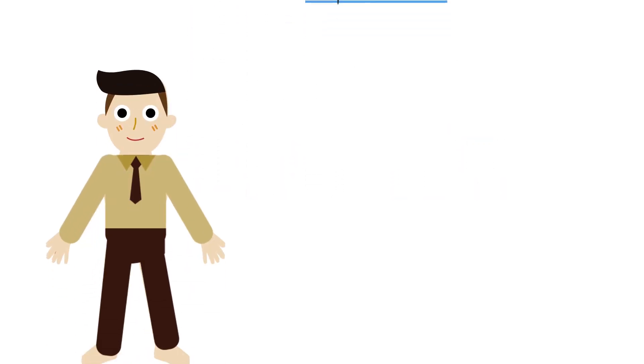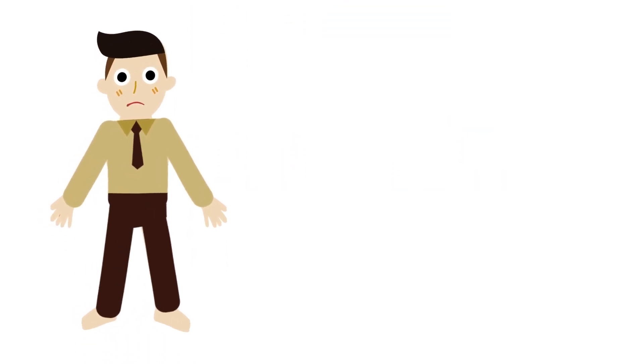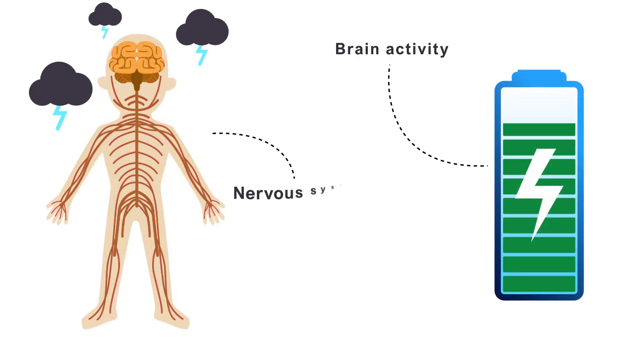What are depressants? Depressants are drugs that lower your body's basic functions and brain activity by depressing the nervous system.